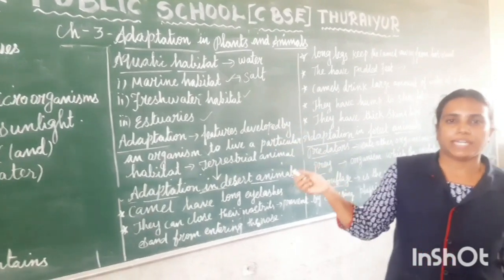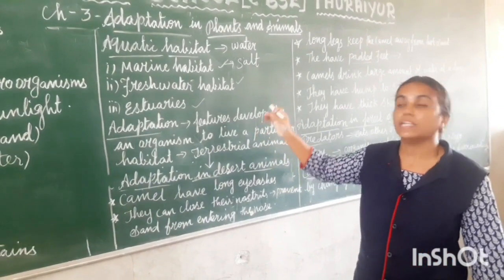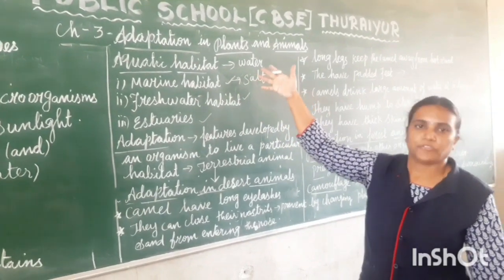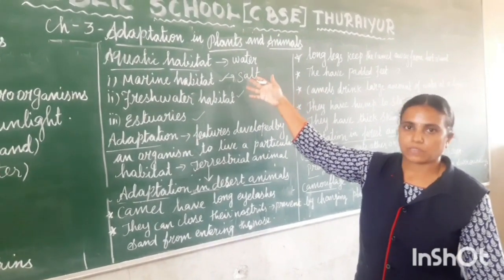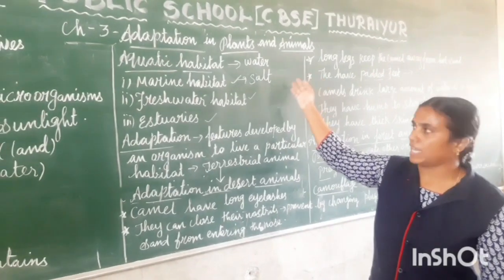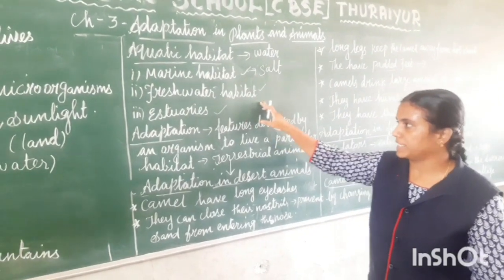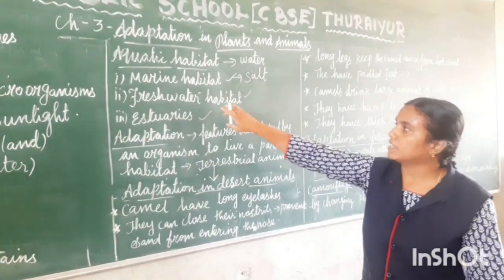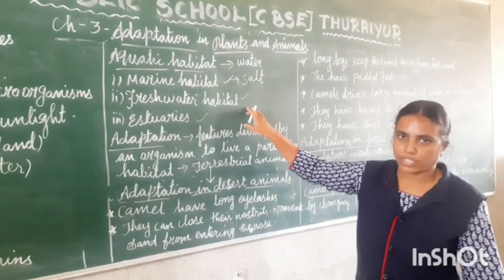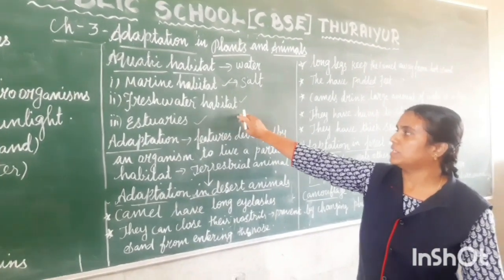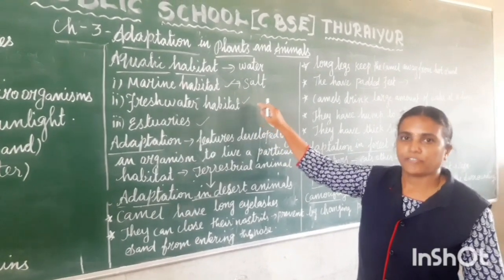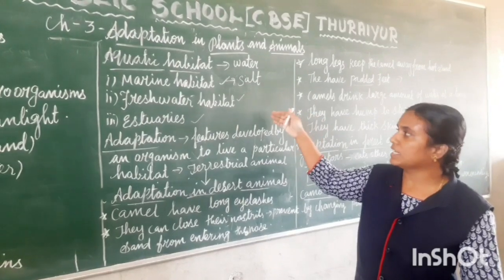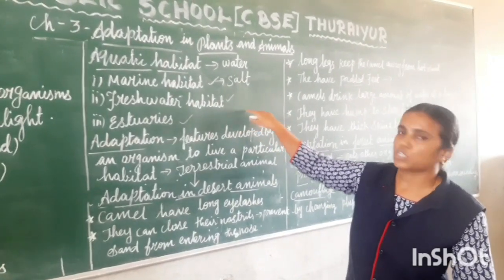Marine habitat is the home for many plants and animals. Animals found in marine habitat include fish and crabs. Freshwater habitat includes rivers, ponds, and streams. Animals living in freshwater habitat include fish and frogs. Lotus is one of the plants that grow in freshwater habitat.